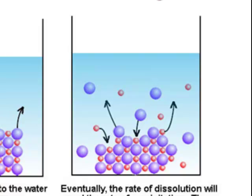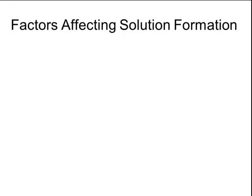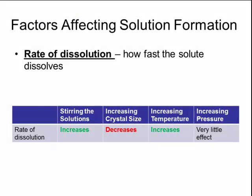When the process of dissolution and crystallization are occurring at equal rates, the solution is now at equilibrium. So the amount of sodium chloride that is dissociating is equal to the amount of sodium and chloride ions that are crystallizing. When a solution is at equilibrium, it appears as though the dissolving has stopped, but in reality both processes are occurring at the same time. There are several factors affecting how solutions form.